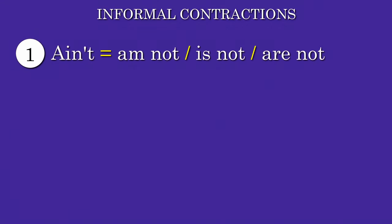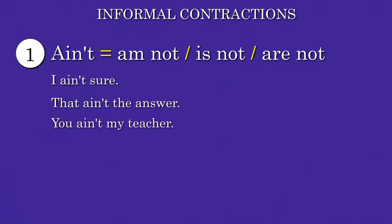Informal Contractions. Ain't can be used for the negative meaning of be or have. Ain't equals am not, is not, are not. Examples: I ain't sure. That ain't the answer. You ain't my teacher.